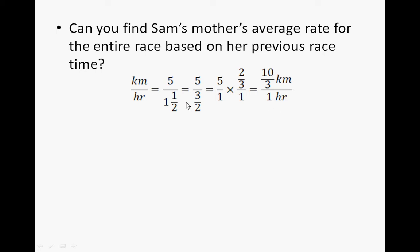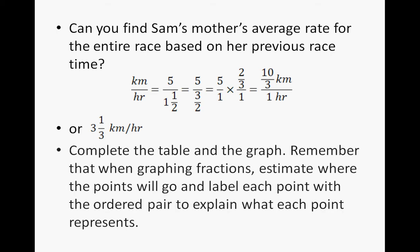It's really important to keep the labels attached so that you know what your rate is. In this case, 10/3 kilometers in 1 hour. And another way we can say that is 3 and 1/3 kilometers per hour. So that's how fast she runs. So complete the table on the graph. Remember that when graphing the fractions, estimate where the points are going to go and label each point with the ordered pair to explain what each point represents. So go ahead and pause the video. Do your calculations on the table and graph them, and then continue the video to check your answers.